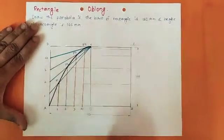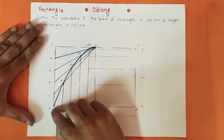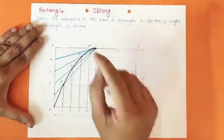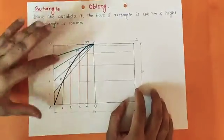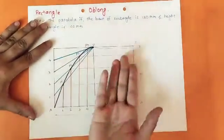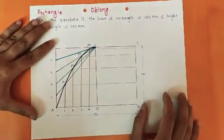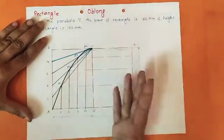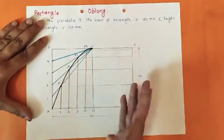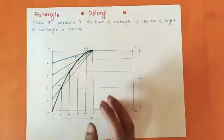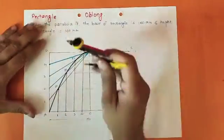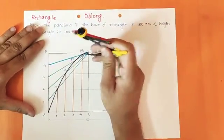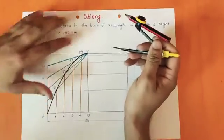Draw a smooth curve starting from point A, passing through P1, P2, P3, P4, and ending at V. As you can see, I have drawn this smooth curve from point A to point V — this is the half section of the parabola.